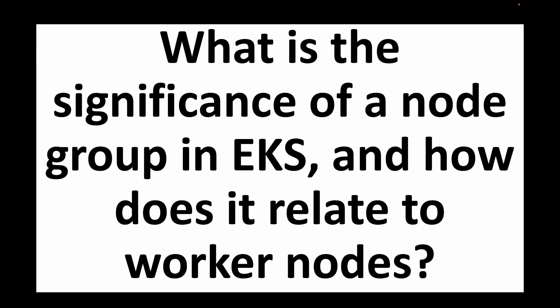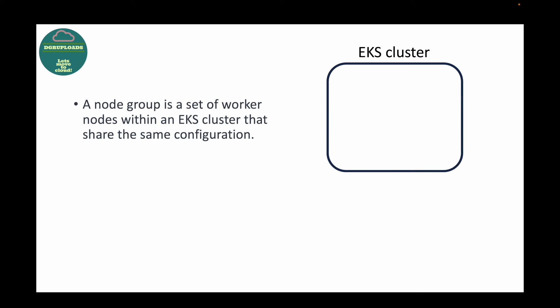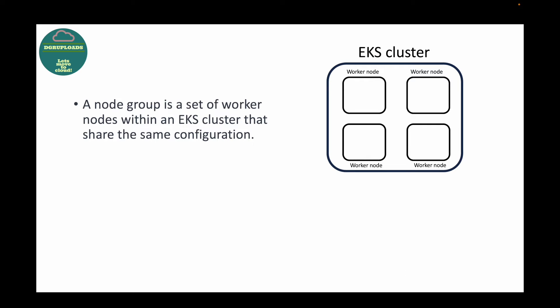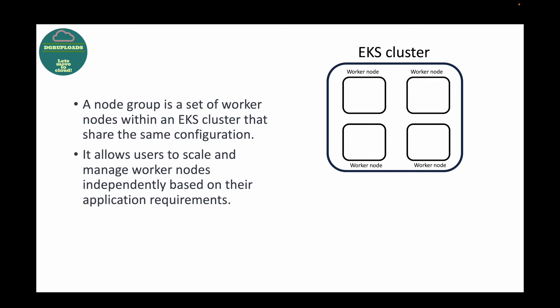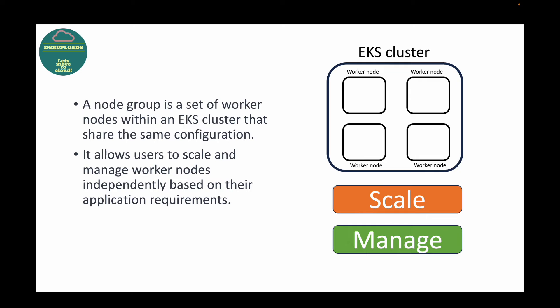The next question is: what is the significance of a node group in EKS and how does it relate to worker nodes? A node group is simply a collection of worker nodes within a cluster. All nodes in a node group share the same configuration — such as the AMI, instance type, and storage. This allows users to scale and manage worker nodes independently based on the requirements of their applications.